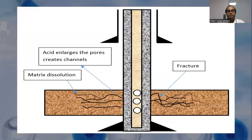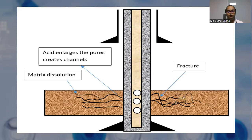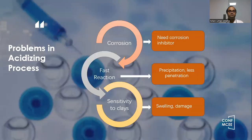This is a schematic diagram which shows a well and the rock around it. We inject the acid, which will attack the rock sample or dissolve it, and it enlarges the pore channels around the wellbore and creates channels for the oil to move into the wellbore and to the surface.